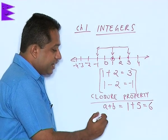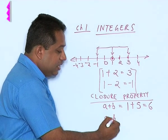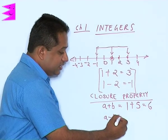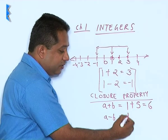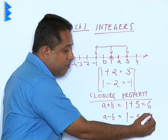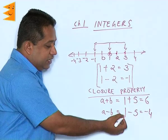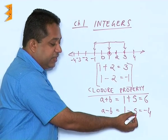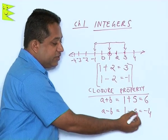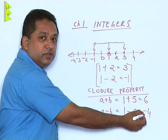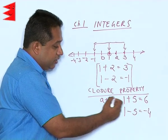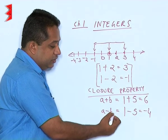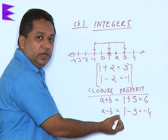What about subtraction? Is a minus b an integer? Let us take the same numbers, 1 and 5. So 1 minus 5, we are going to get minus 4. So 1 is an integer, 5 is an integer, when we subtract two integers we are still getting an integer.